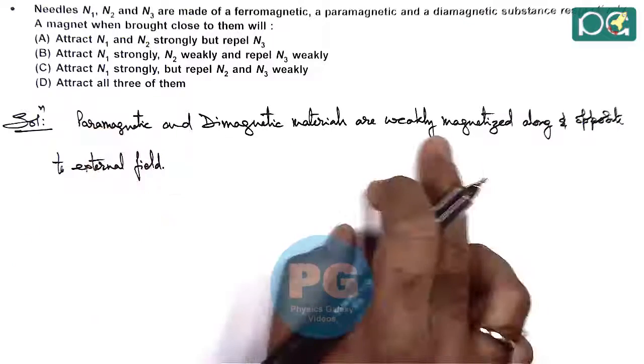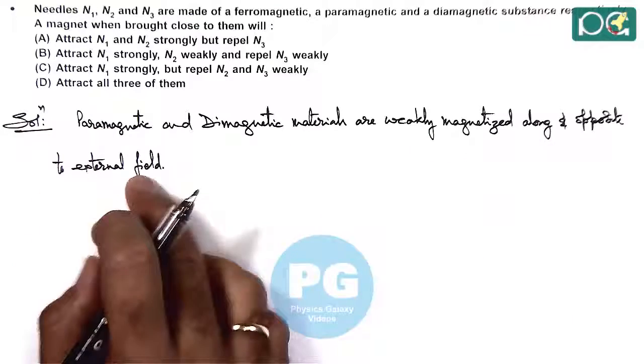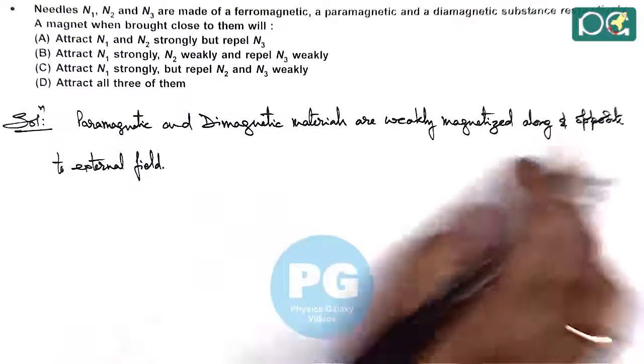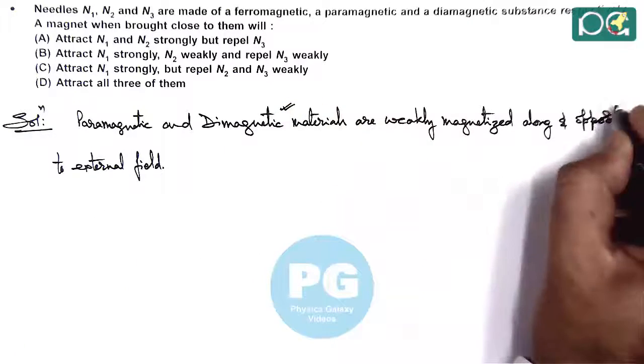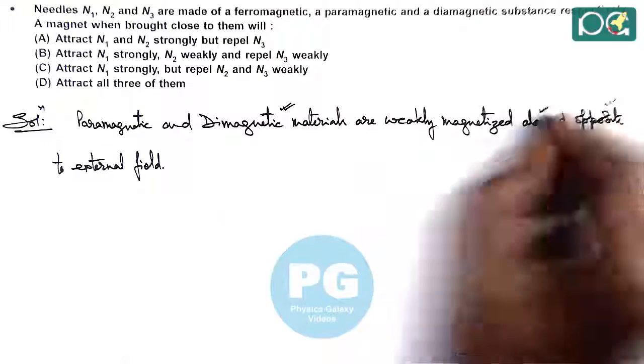So paramagnetic is weakly magnetized along the direction of external field, and diamagnetic is magnetized opposite to external magnetic field.